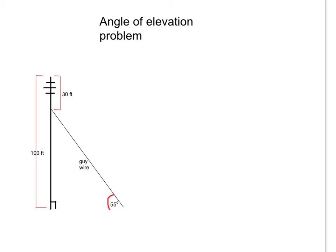To continue on, the guy wire makes a 55-degree angle with the ground. And the question is, what's the length of the wire? So I'll call the guy wire x, or the length of the guy wire x.